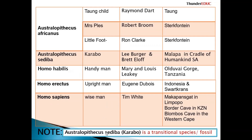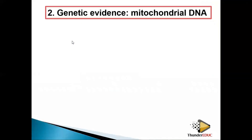Note that Australopithecus sediba, which we call Karabo, is a transitional fossil. It is a transitional fossil between Australopithecus africanus and Homo habilis. So this Australopithecus sediba is the one which tries to link between these two, and sometimes you call it a missing link.